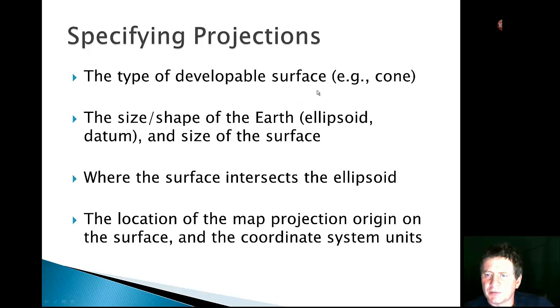So what type of surface it is. Conic. What the size of the shape of the Earth is. The ellipsoid or datum. Where do you intersect the ellipsoid and the location of the origin for projection. So all these are necessary to describe how the map is going to be identified.